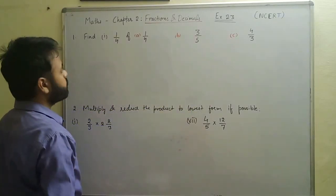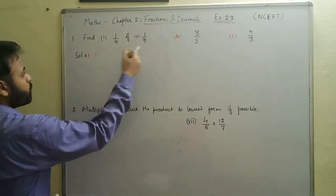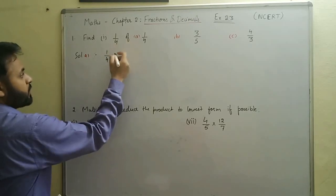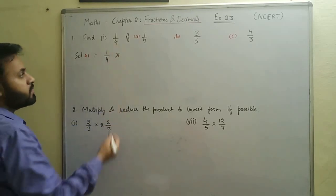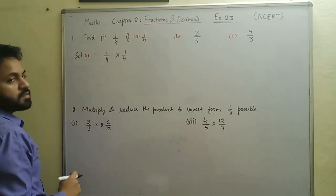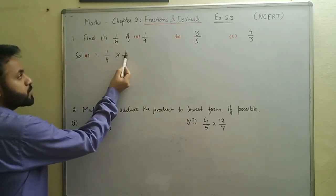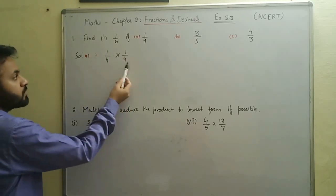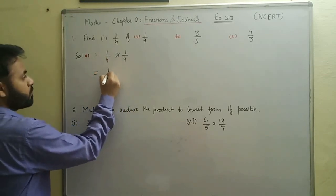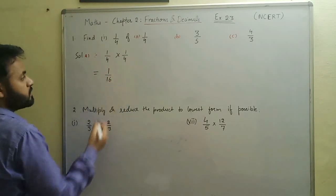Let's start part a: one by four of one by four. In place of 'of' we write multiply, giving us one by four multiplied by one by four. When we multiply two fractions, we multiply their corresponding numerators and denominators. One times one is one, and four times four is sixteen, so the answer is one by sixteen.